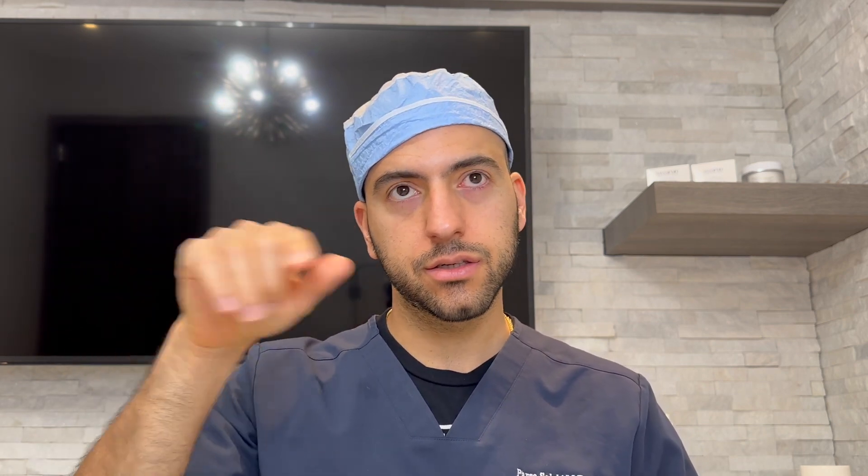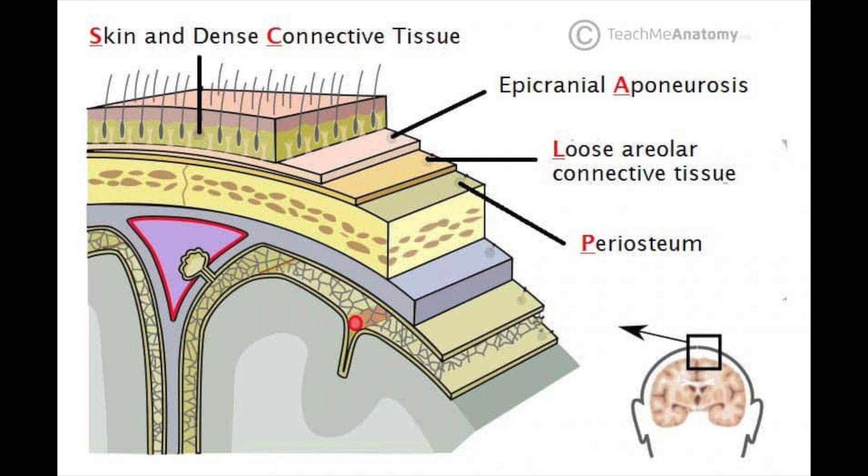The best way to remember the layers of the scalp is the mnemonic SCALP. S stands for skin. C stands for connective tissue — some people say subcutaneous fat, that's where the C comes in, but connective tissue is probably the best way to think of it. A is the important one: aponeurosis. L is loose areolar tissue. P is periosteum.